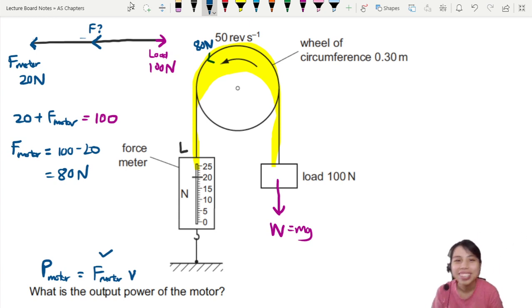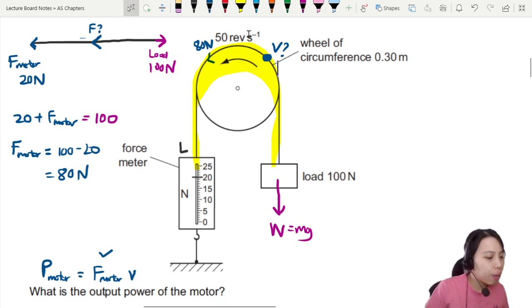If you imagine a point on this wheel, it's going to be moving at a certain speed because of the rotation. Question is, what is the speed? The hint lies in this 50 revolutions per second. In one revolution, how far does this thing travel?